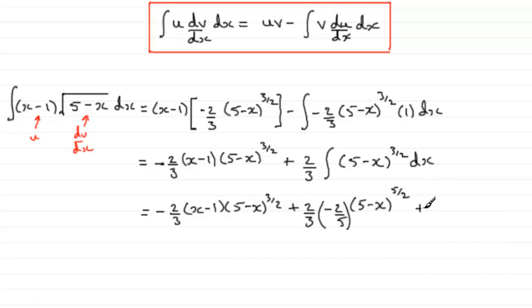So you mustn't forget the constant of integration there. So all I need to do now is just tidy this up one more time, and we've got minus 2 thirds then x minus 1 multiplied by 5 minus x to the power 3 over 2. And for this term, that's going to be minus 4 fifteenths. Minus 4 fifteenths then of 5 minus x to the power 5 over 2 and plus c.